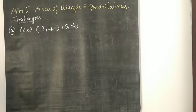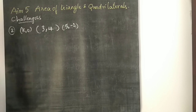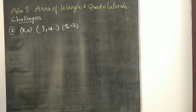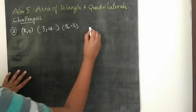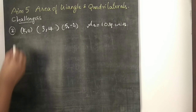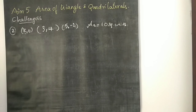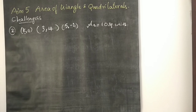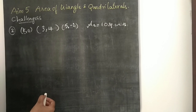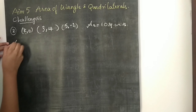Now we will see the second question. Here, three points are given: (K, 0), (3, 4), and (5, −2). They have also given us the area, which is 10 square units. We have to find the value of K — there is an alphabet in the first point. So how do we find it?